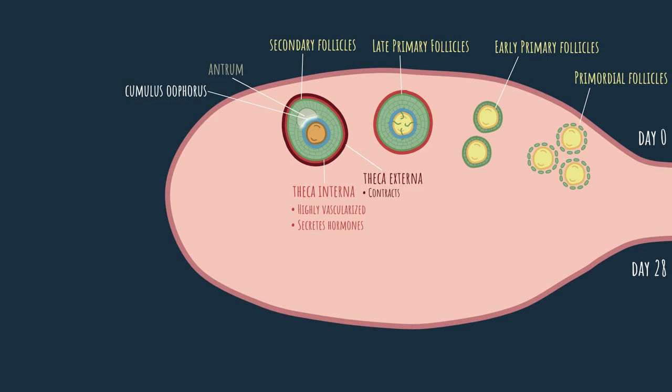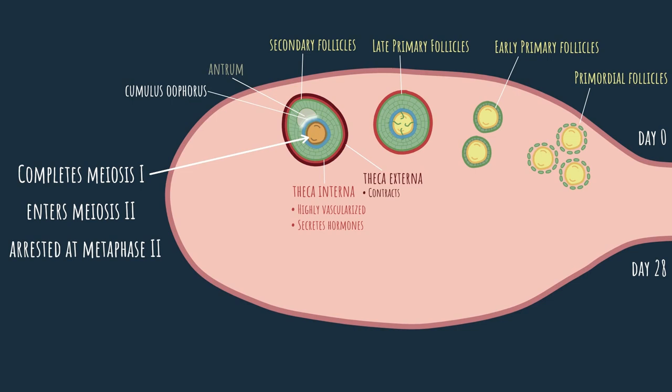When we reach the end of the secondary follicle stage, the oocyte itself also goes through a change. It finally wakes up from its arrested state. It completes meiosis I, enters meiosis II, but once again is arrested. This time at metaphase II.